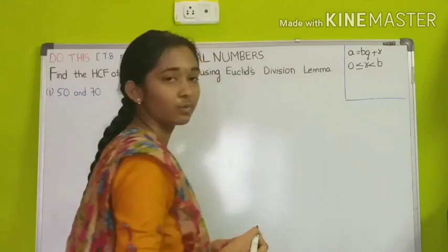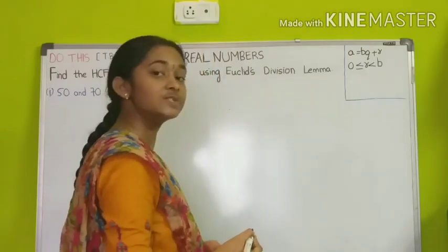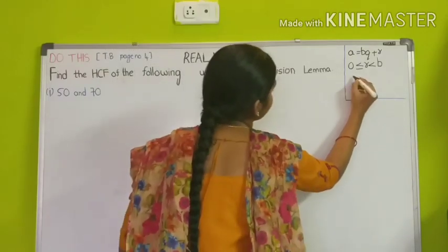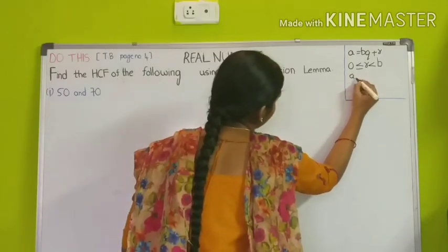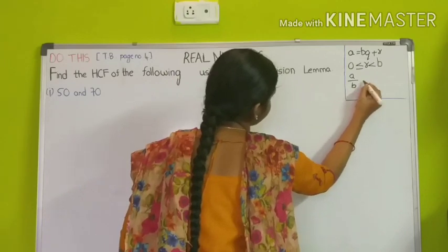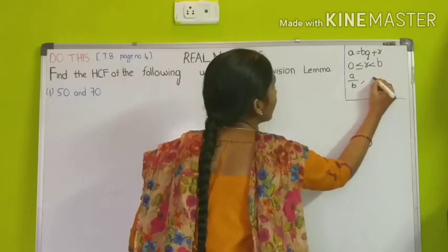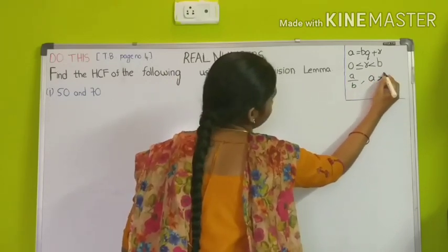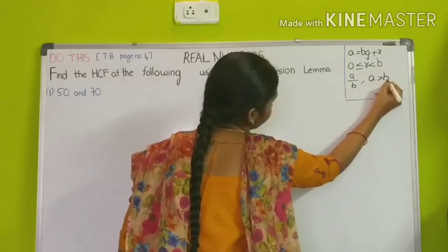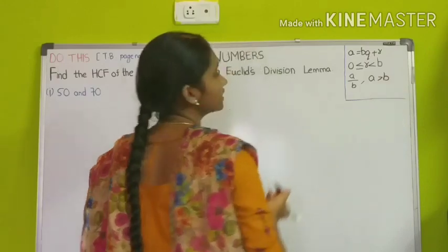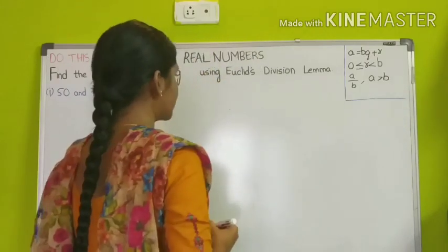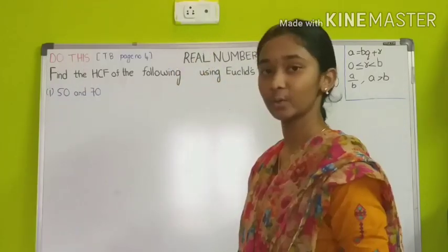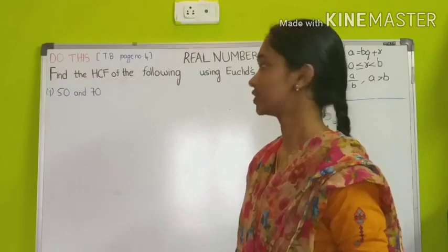The divisional form is A divided by B. A by B, and A is always greater than B. To find the values of A and B, we have A is always greater than B. And now we read the question.